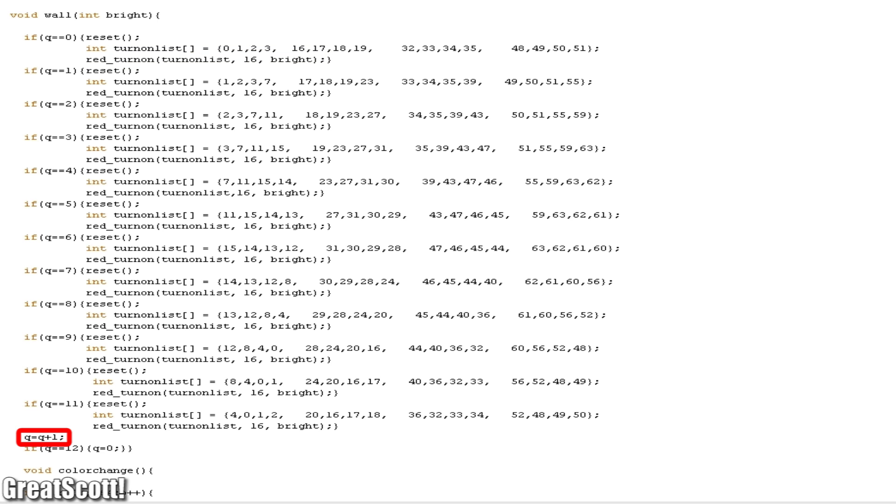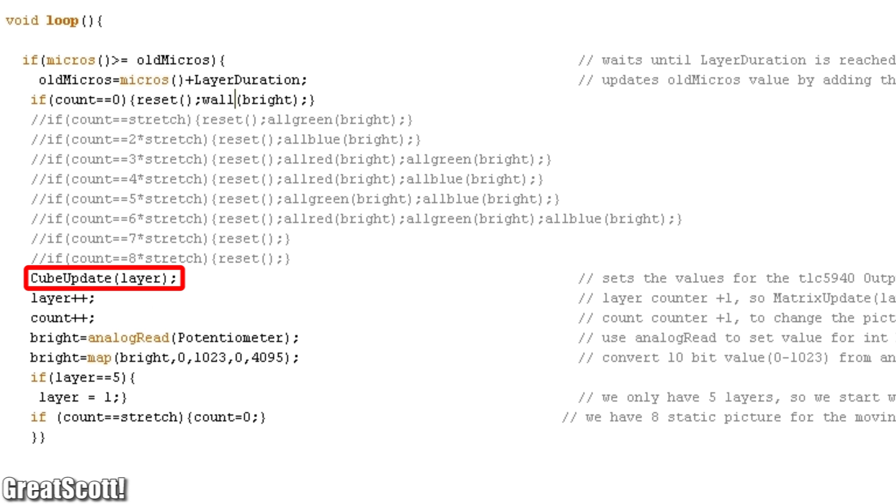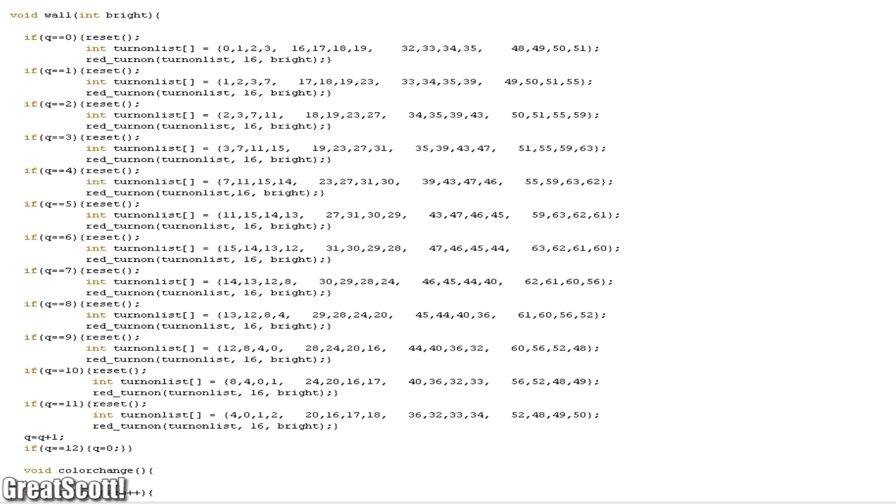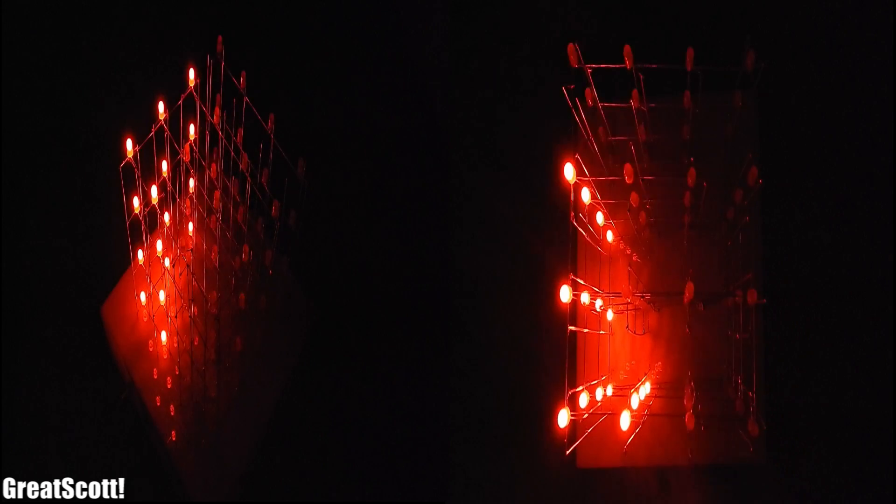After one if statement the integer Q, which I use here as a counter, goes 1 up and the cube will update and show us the first picture. Then the second if statement gets active and we see the second picture and so on. And here is the final animation.